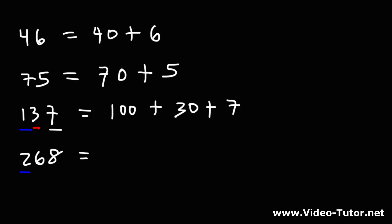268. The 2 is in the hundreds place so that's 200. The 6 is in the tens place, that's 60. It has a value of 60. And the 8 just has a value of 8. So 268 can be written as 200 plus 60 plus 8.